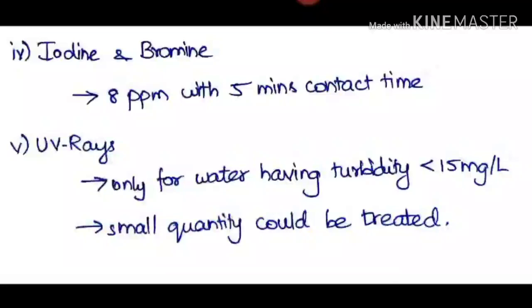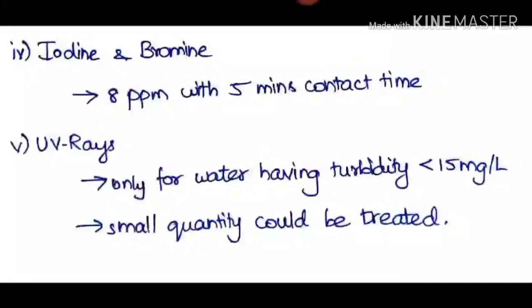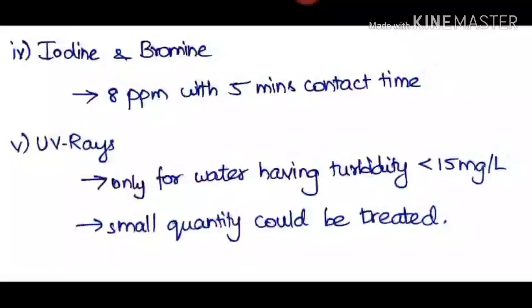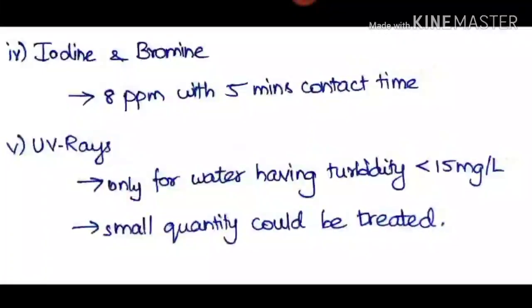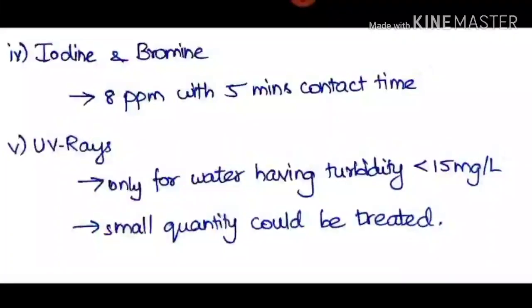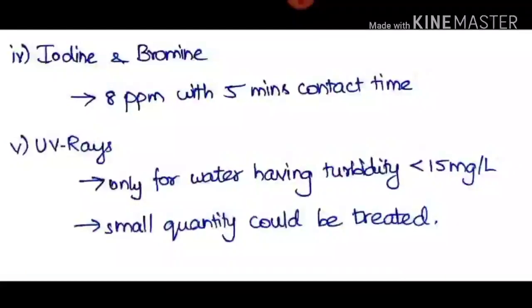The next method is UV rays. It is only used for water having turbidity less than 15 milligrams per liter, so it cannot be used for high-turbidity waters. Only small quantities can be treated because electric support is needed and the water has to be passed through the UV rays. The depth of water that can be treated is limited to nearly 10 centimeters, so this method is used for surgical purposes in hospitals.